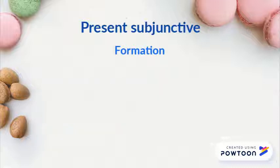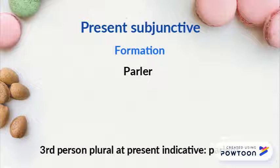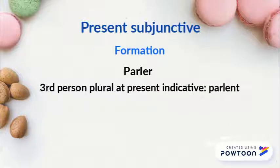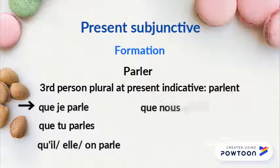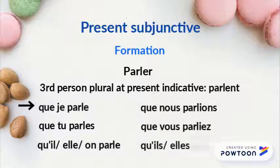Here is an example with PARLER. The third person plural at the present indicative is PARLENT. Therefore, the present subjunctive will be: que je parle, que tu parles, qu'il/elle parle, que nous parlions, que vous parliez, qu'ils/elles parlent.